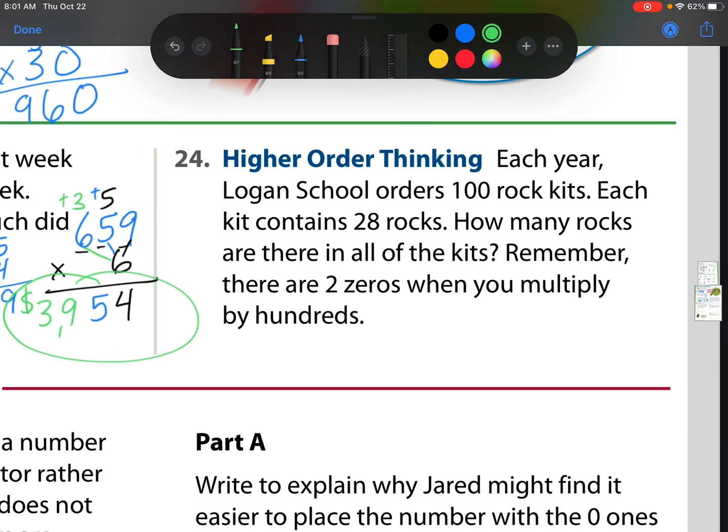24 now. Each year, Logan School orders 100 rock kits. Each kit contains 28 rocks. How many rocks are there in all the kits? Remember, there are two zeros when you multiply by the hundreds. So we have 28 times 100. We have 100 groups, and in each group, the size is 28. Well, notice, this is almost the exact same thing as what we've been working on. But there's two zeros instead of one. So what do you think we do? Well, what I think we do is we just get rid of those zeros, do our problem, and add them back on. So let's do that. I'm going to put those two zeros on, and then I have 1 times 28, which is 28. So how many rocks are there? There's 2,800 rocks.